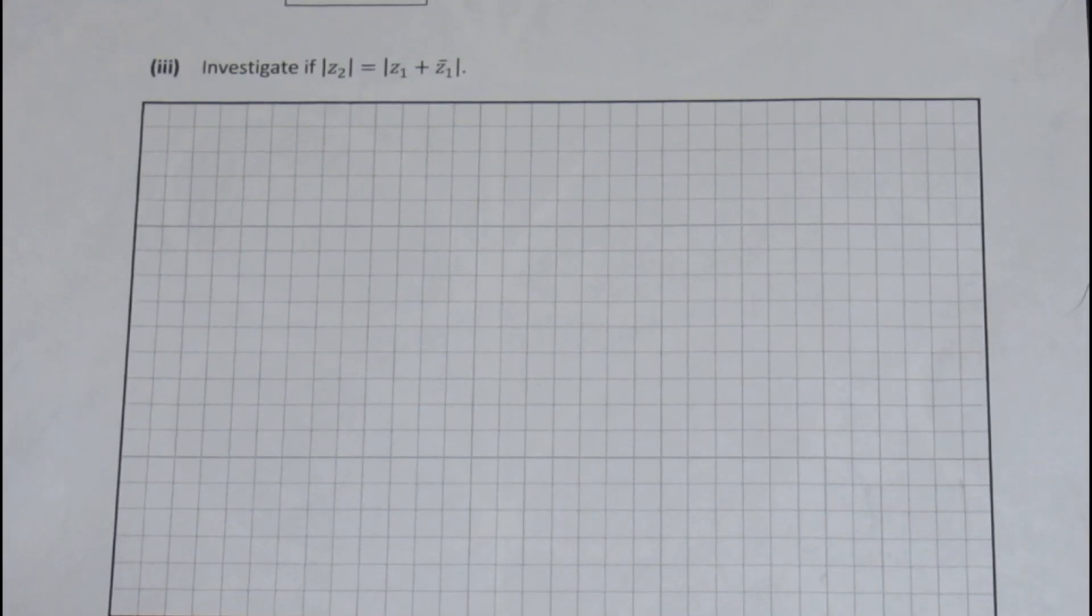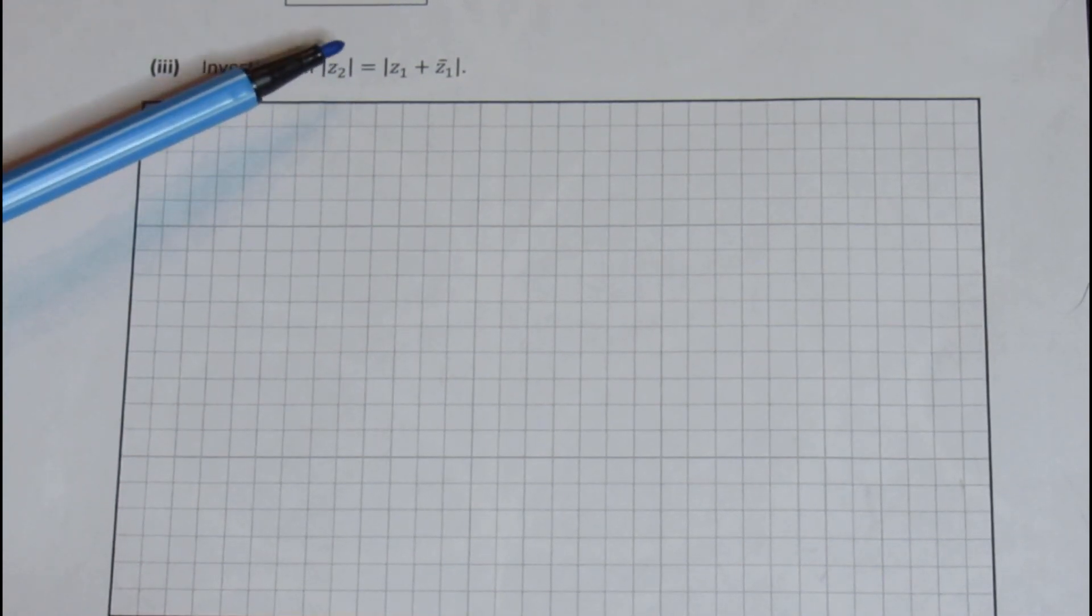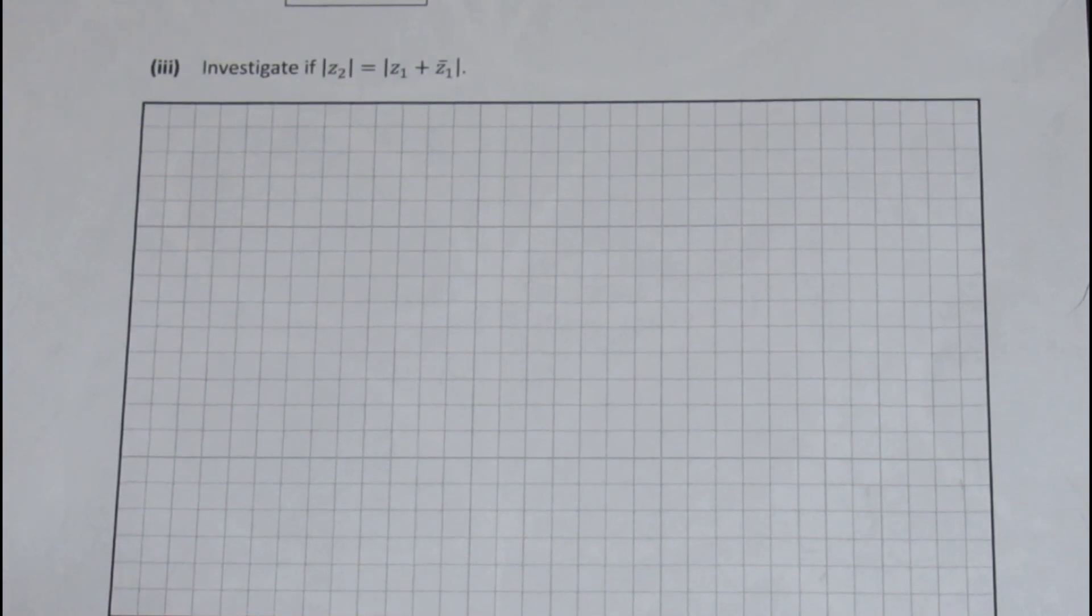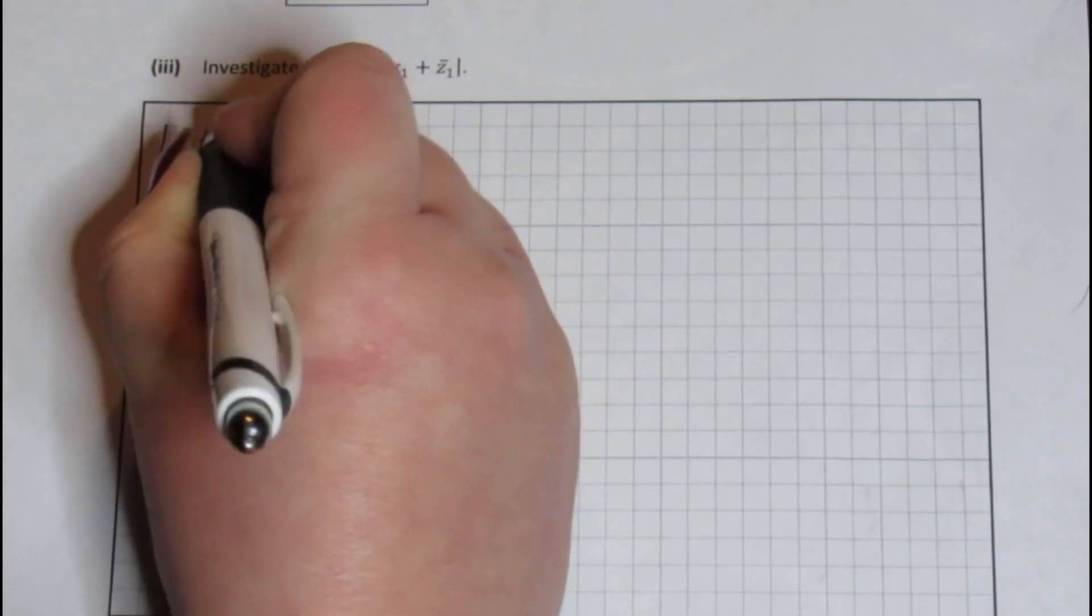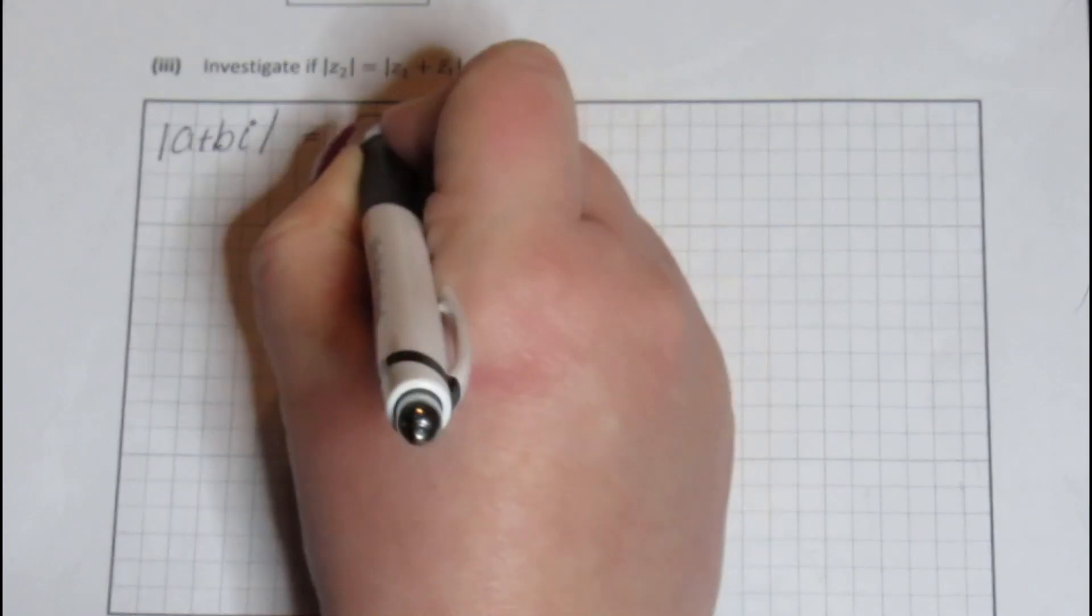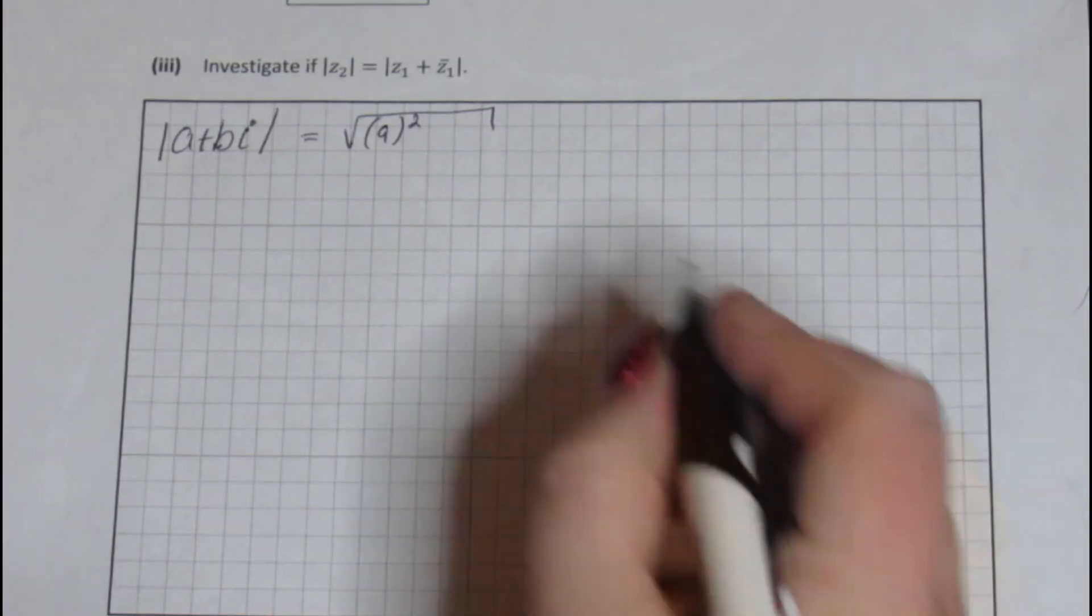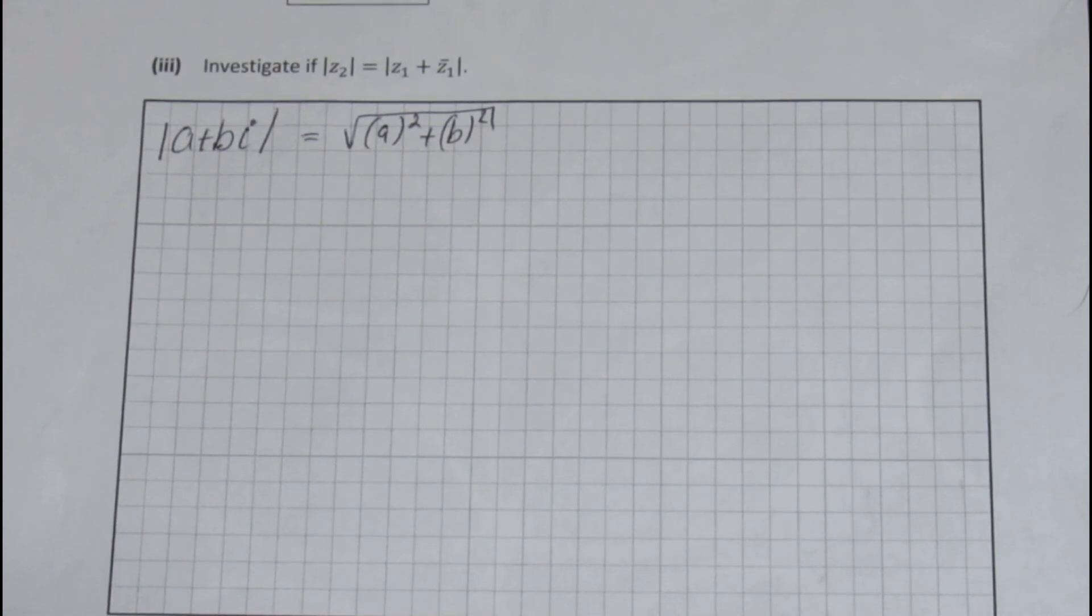So in part 3 we're asked to investigate if the modulus of Z2 is the same or is equal to Z1 plus Z1 bar added together on the modulus of that. So what does the modulus do? The modulus tells us the distance our complex number is from 0, 0 on our graph. So a quick revision before we start. If I was asked for the modulus of a complex number, let's call it a plus bi. To get the modulus of it, I take the real bit and I square it plus the imaginary bit and I square it and I put it underneath a big square root.